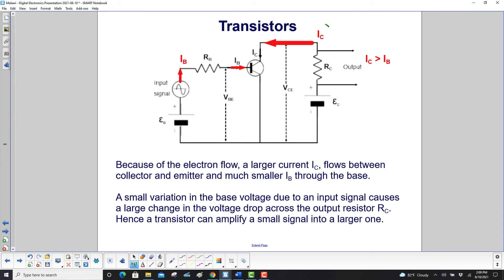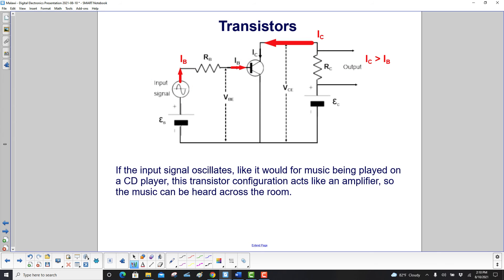Because of the electron flow, a large current IC flows between collector and emitter, and a much smaller IB flows through the base. A small variation in the base voltage due to an input signal causes a large change in the voltage drop across the output resistor. IC is greater than IB, so the transistor amplifies the small signal into a larger voltage. It's an amplifier. If the input signal oscillates, like music from a CD player, this transistor configuration acts as an amplifier so the music can be heard across the room. You would feed a much larger current to your speakers.